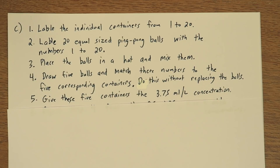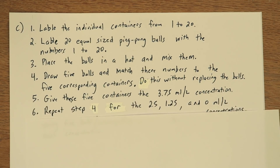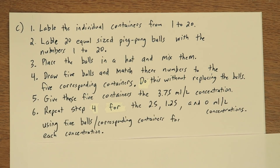Step 5: give these 5 containers the 3.75 milliliters per liter concentration. And finally, repeat step 4 for the 2.5, 1.25, and 0 milliliter concentrations, using 5 balls and their corresponding containers for each concentration. That would give each treatment the same number of experimental units — 5.